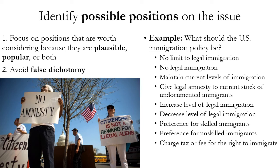Returning to the issue of what the U.S. immigration policy should be, here are some possible positions worth exploring: no limit to legal immigration, also called the open borders position; no legal immigration at all, an extreme closed borders position. But notice, stopping there would be a false dichotomy. So there are many other positions: maintain the current levels of immigration; give legal amnesty to the current stock of undocumented immigrants already residing in the United States; increase the level of legal immigration; decrease the level of legal immigration from what it is currently.